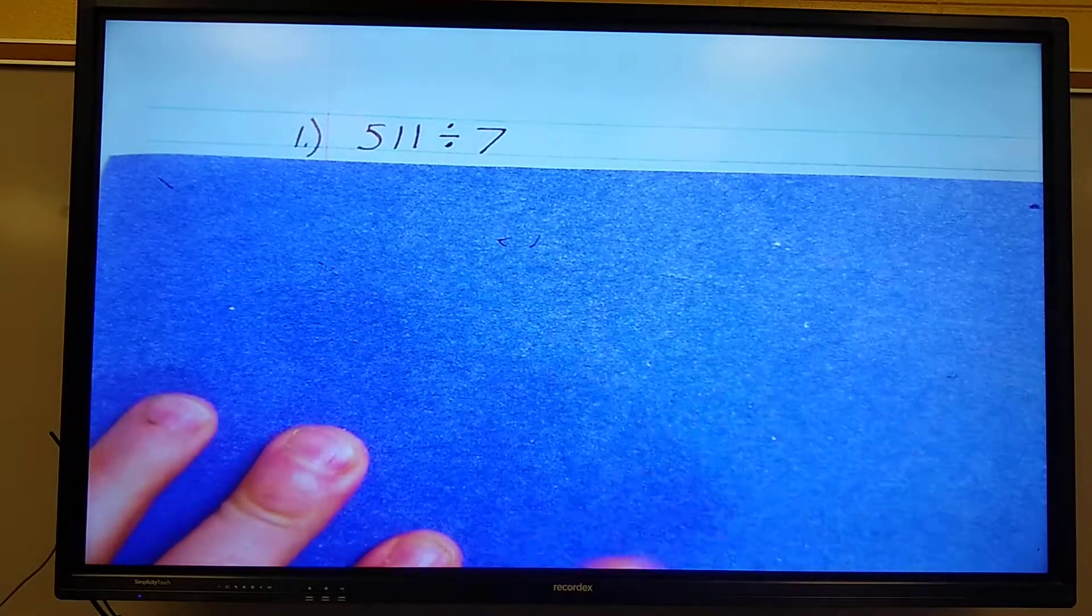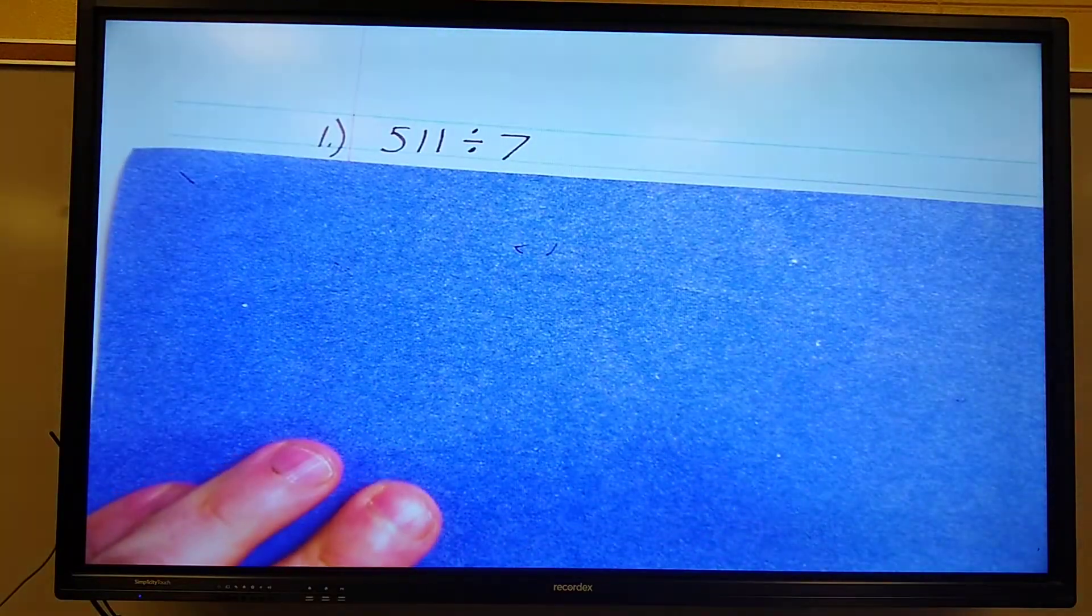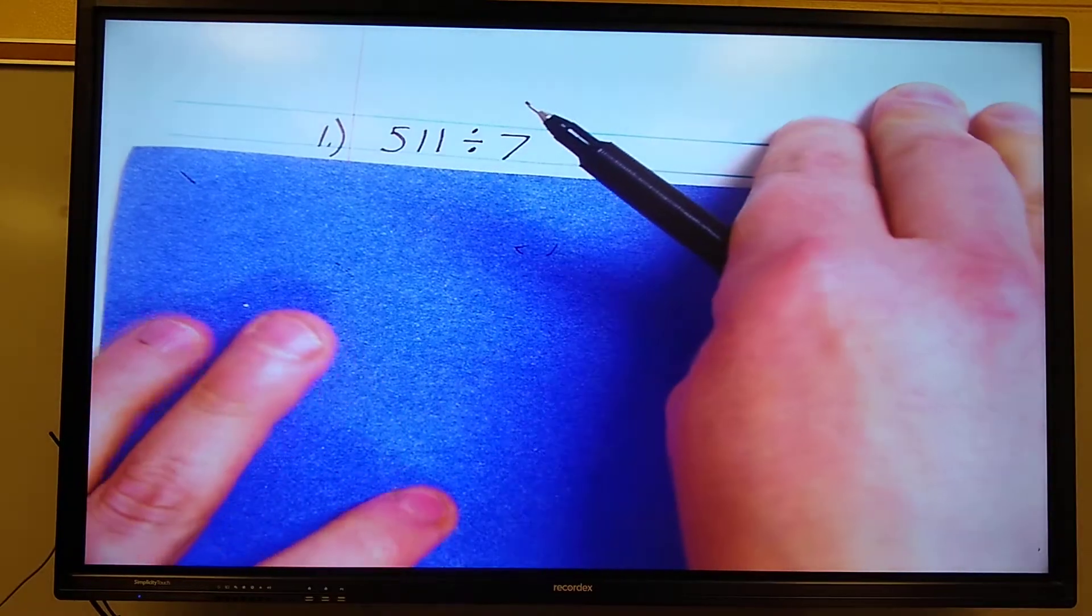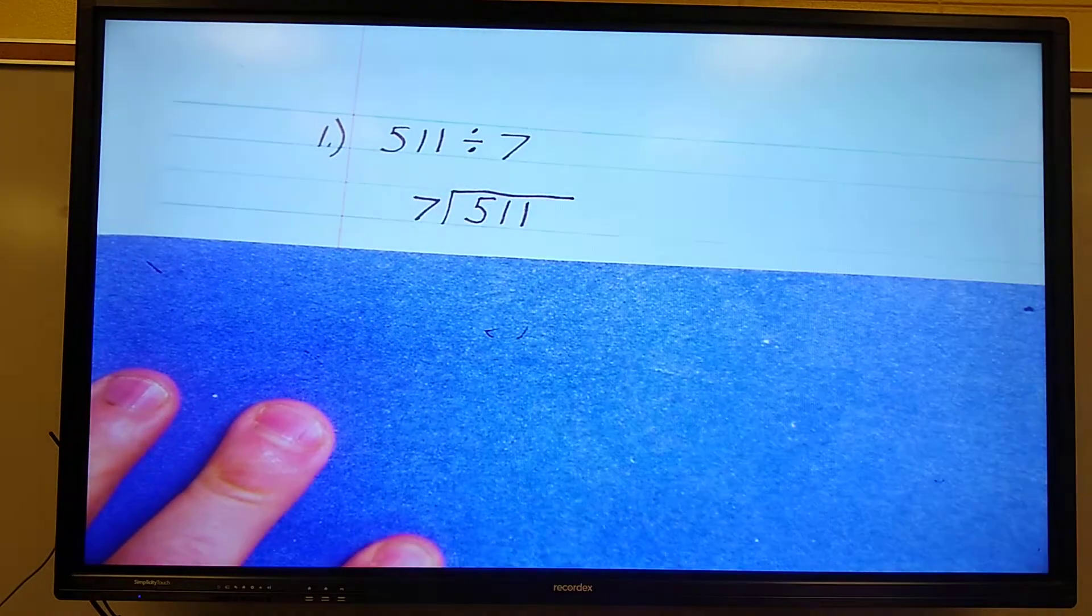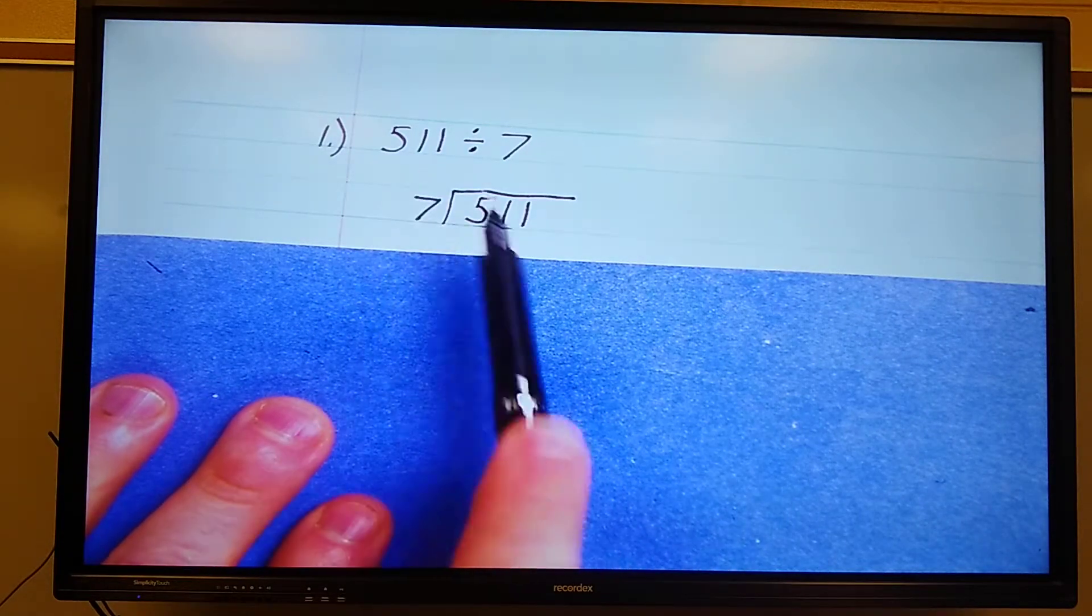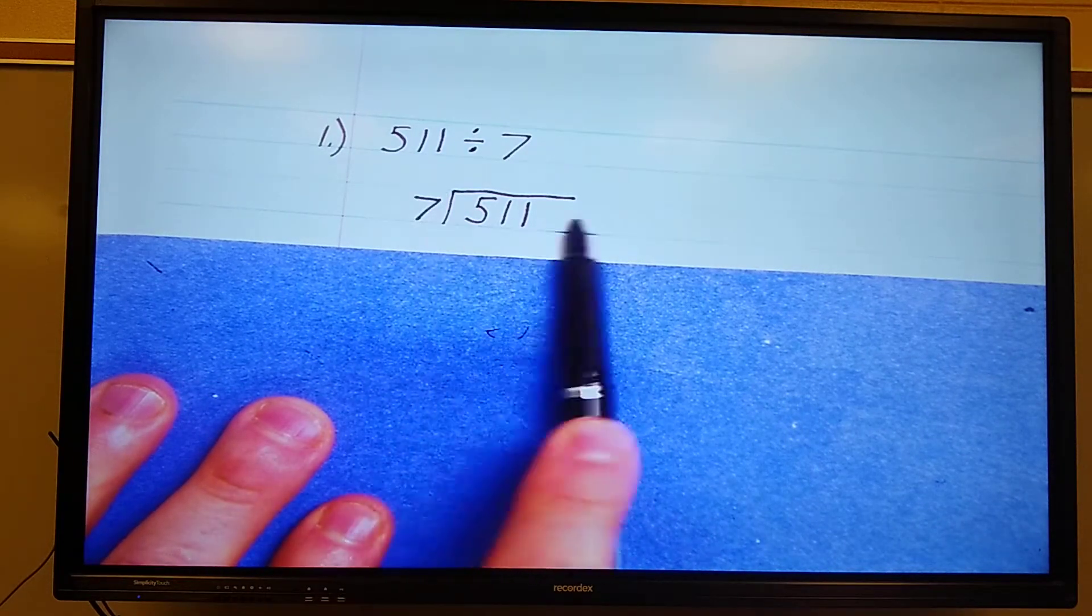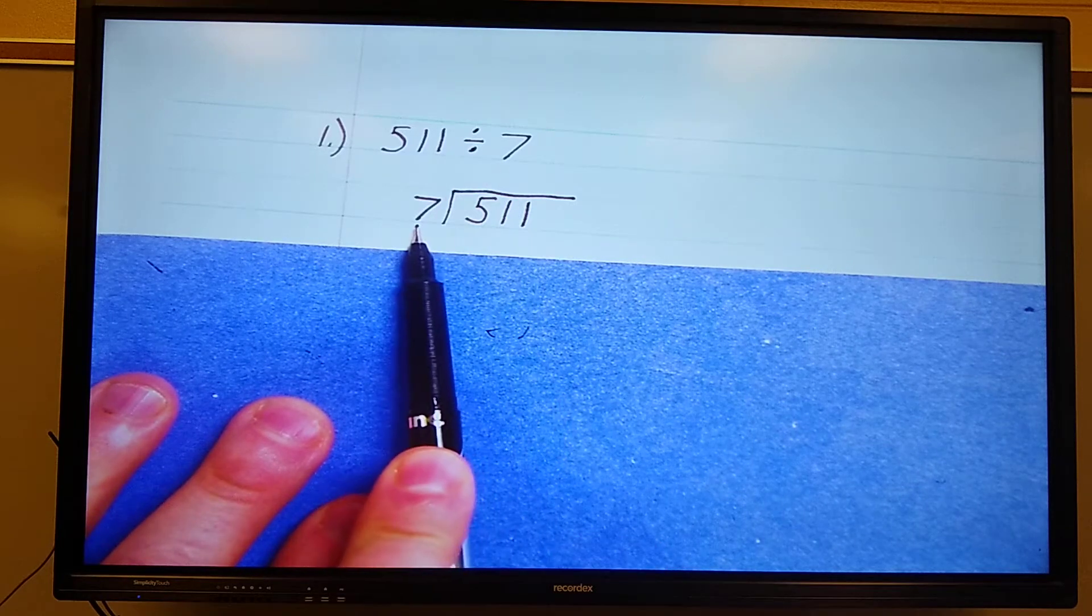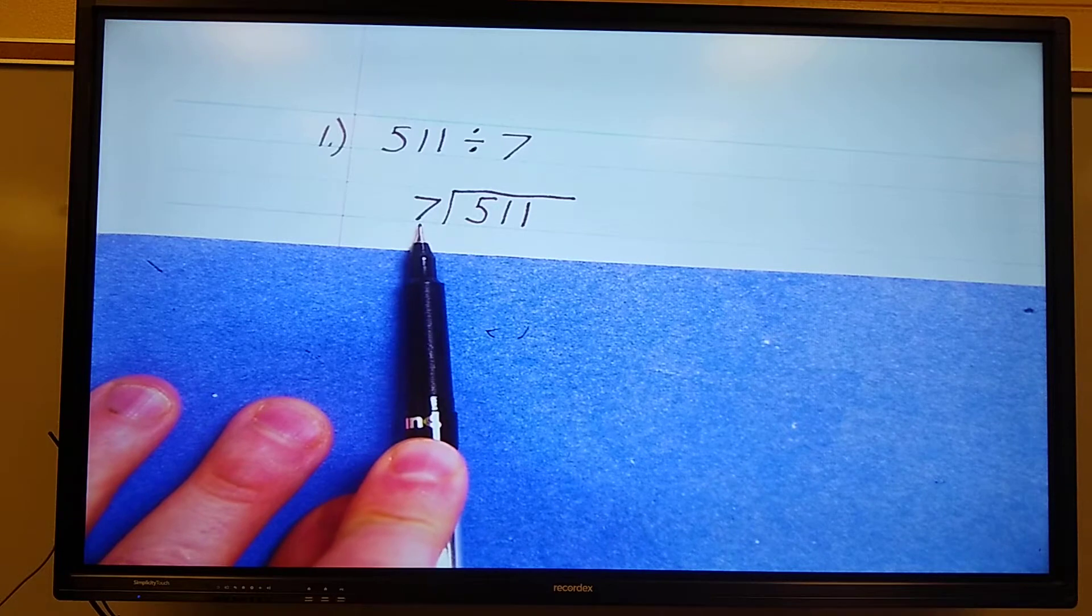This one is 511 divided by 7. Ten hands, that rhymes. So here we have it. 511 is the dividend, it goes inside the division frame. 7 is the divisor, it goes outside the division frame.